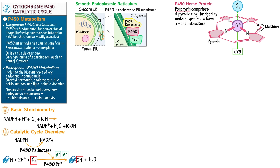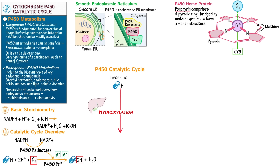Now let's tackle the fundamentals of the cytochrome P450 catalytic cycle. We draw our drug substrate and show a carbon-hydrogen bond, indicating that the drug is lipophilic in its present state, which allows it to pass freely across cell membranes. Ultimately, this cycle will catalyze a hydroxylation reaction, most commonly in the liver, wherein the carbon-hydrogen bond on the drug will be oxidized to a carbon-hydroxyl bond — a polar moiety that can be renally excreted. P450 catalyzes numerous oxidation reactions and also various reduction reactions; three predominate: hydroxylation, heteroatom oxidation, and epoxidation.